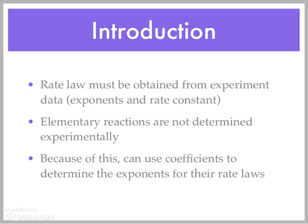So again, just to re-emphasize, a rate law must be obtained from experimental data, which means you need to figure out the exponents and the rate constant experimentally. That's for an overall reaction, but when you're dealing with elementary reactions or the steps within a reaction mechanism, you don't need to determine it that way. You can just look at the equation and figure out the rate law from that.